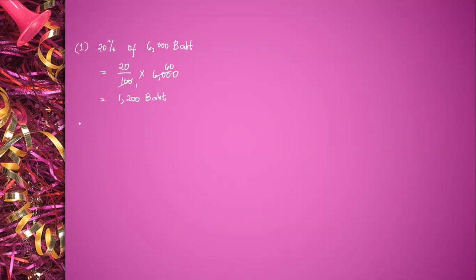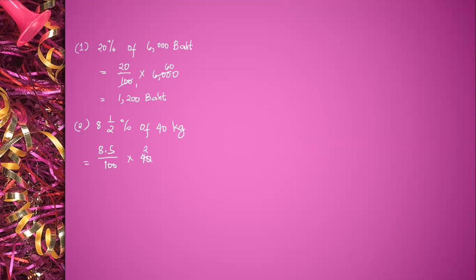Number two: 8 and a half percent of 40 kilograms. Convert 8 and a half into a decimal — it becomes 8.5. Divide by 100 times 40. 40 divided by 20 is equal to 2, and 100 divided by 20 is equal to 5. 8.5 times 2 is equal to 17.